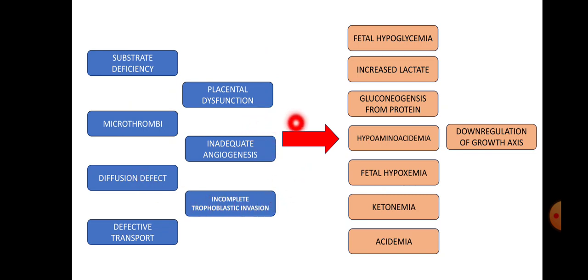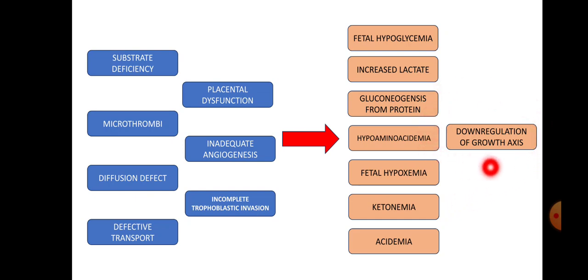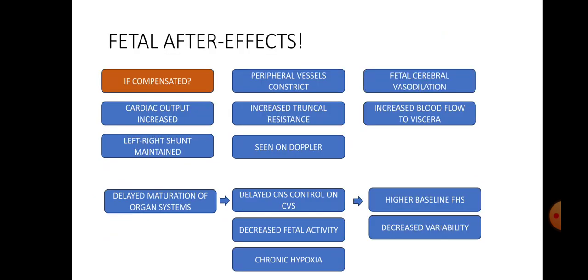When substrate fails to reach the fetus, hypoglycemia develops, triggering metabolic processes that utilize proteins and fats as energy sources. Anaerobic respiration in the absence of oxygen leads to increased lactates in the fetus. Gluconeogenesis occurs, amino acids are consumed, and chronic hypoxia sets in — all leading to fetal acidosis and fetal ketosis, which ultimately cause significant downregulation of the growth axis, resulting in a growth-retarded baby.